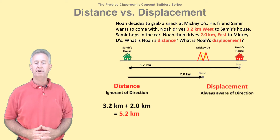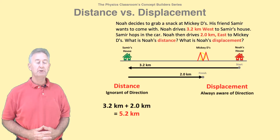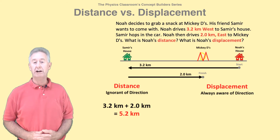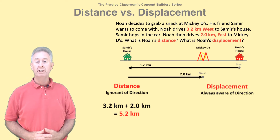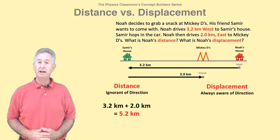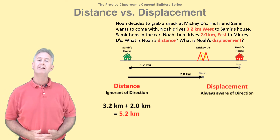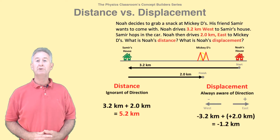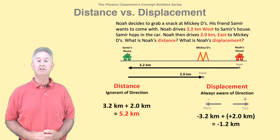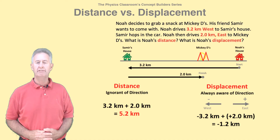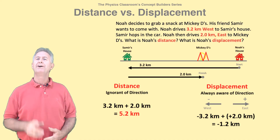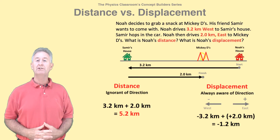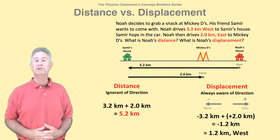Displacement is quite different — it is direction aware. It matters that the 3.2 kilometers was west and the 2.0 kilometers was east. To determine the displacement, consider one of these to be positive and the other to be negative. Let's say that positive is to the east and negative is to the west. In that case, the overall displacement is negative 3.2 kilometers plus positive 2.0 kilometers. This adds to negative 1.2 kilometers. We said negative means west, so the displacement is 1.2 kilometers to the west.